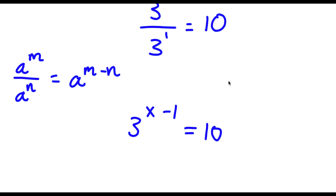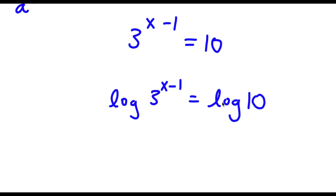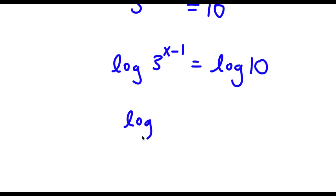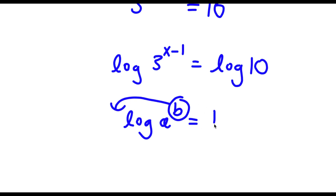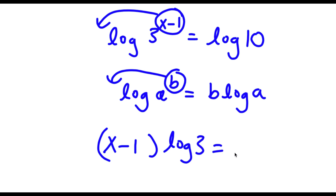So now to solve this, I'm going to take the log on both sides. So now I have log of 3 to the power of x minus 1 is equal to log 10. Now if I have something in the form log a to the power of b, I can actually move this exponent b to the front of the logarithm — so this is going to equal b times log a. So in this case, log of 3 to the power of x minus 1, I can move x minus 1 to the front, so this equals x minus 1 times log 3 is equal to log 10.